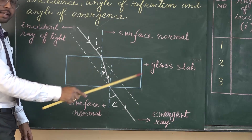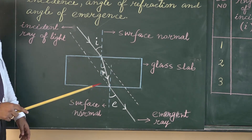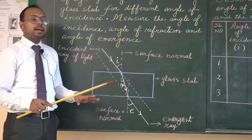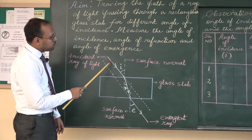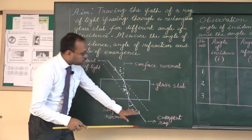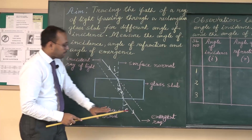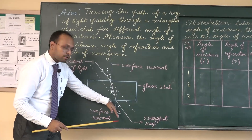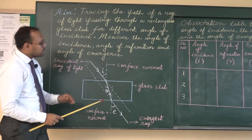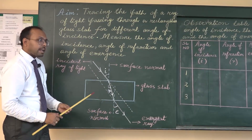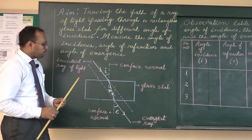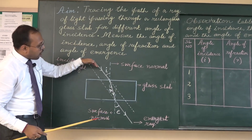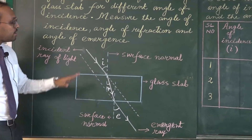For this experiment, the apparatus required includes a glass slab, a board, a white page, and some long pins. The long pins will be placed at two points on the incident ray, and we will observe through the glass slab from the other side. There will be a shifting in the position of the pins due to refraction, and we will use another two pins to mark the emergent ray and observe how much deviation is occurring.